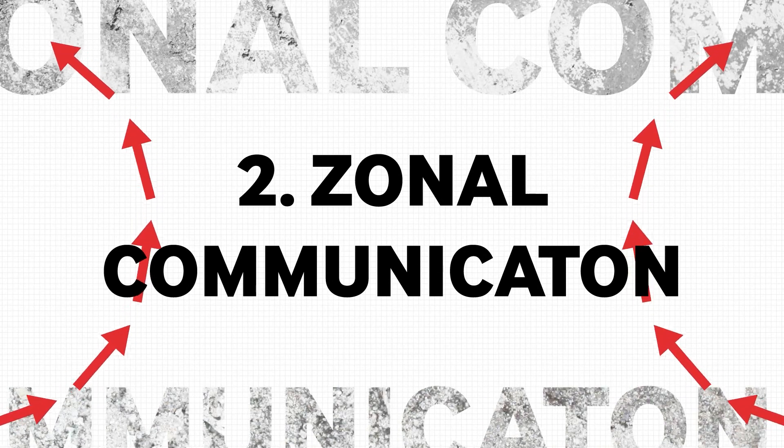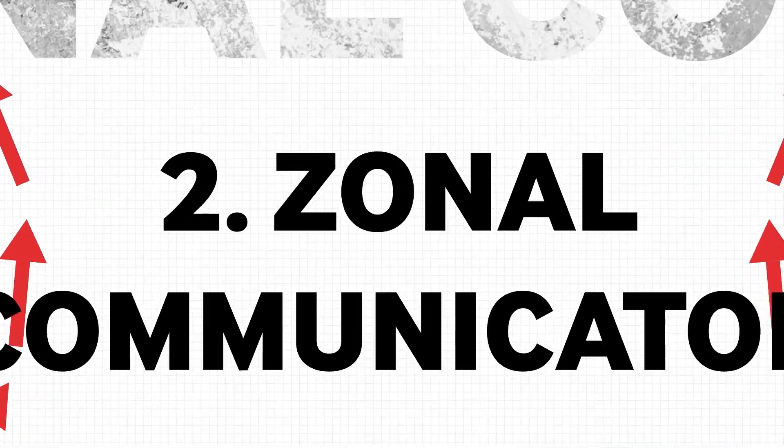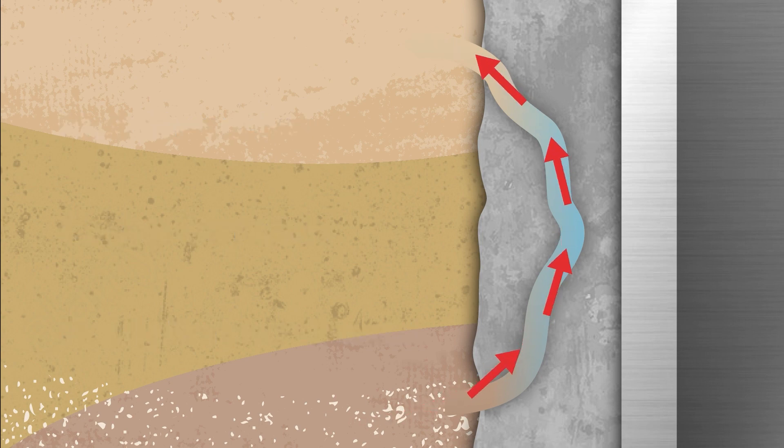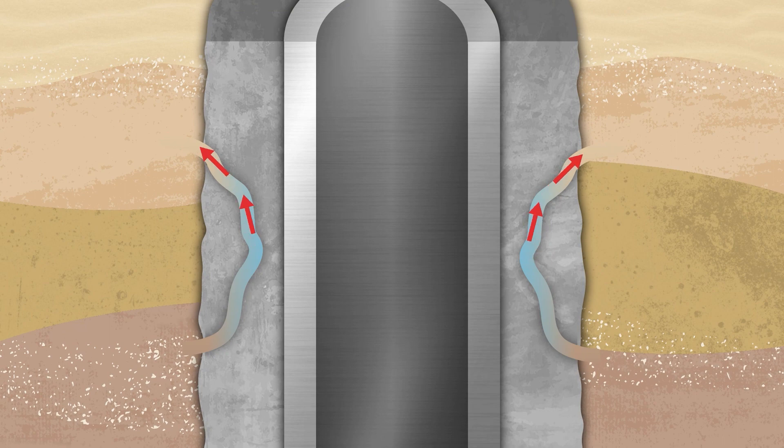Zonal communication is when water or gas from one zone travels into another. Mud channeling, casing corrosion, and poorly bonded cement can all create pathways for water and gas to migrate between zones. The best method of prevention is to eliminate the flow path by achieving zonal isolation through full mud displacement.